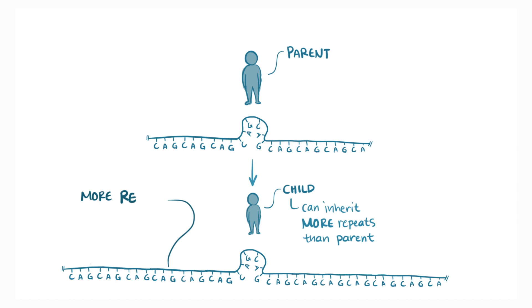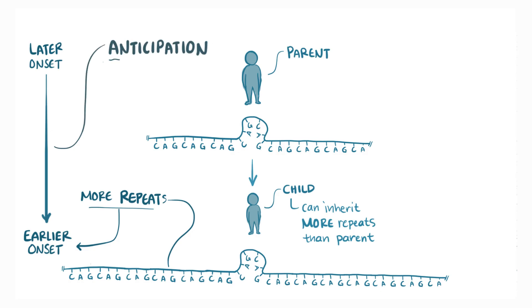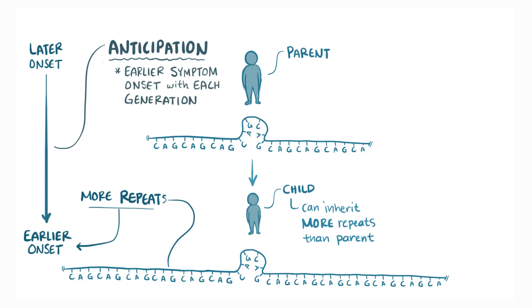The higher the number of repeats in the protein, the earlier the age when a person starts having symptoms. This phenomenon is called anticipation, which means that Huntington disease families often show earlier symptom onset with each generation.